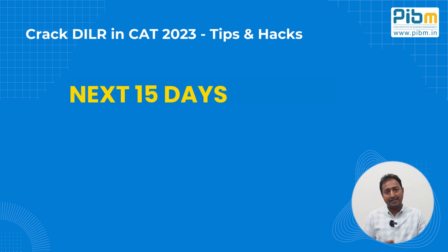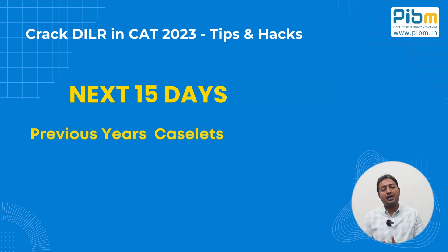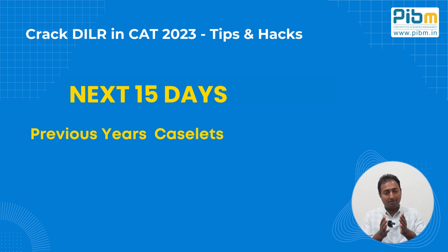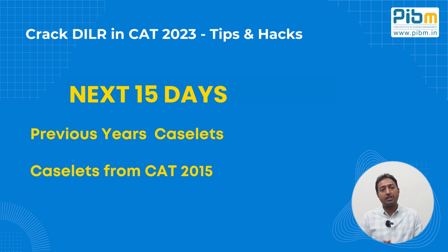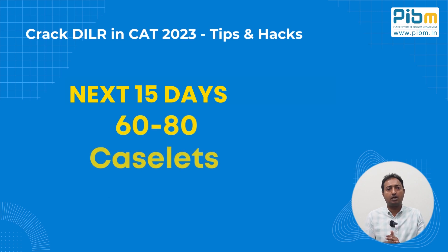For the next 15 days, please try and solve caselets that have come in past CAT papers. I would want you to solve caselets from 2015 to 2022 — that's seven years. Each year had a different number of caselets, so in all you would have around 60 to 80 caselets. I would want you all to try and solve all of those.